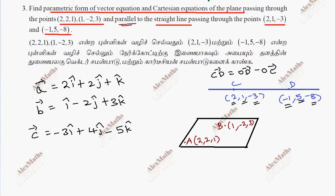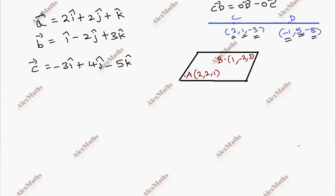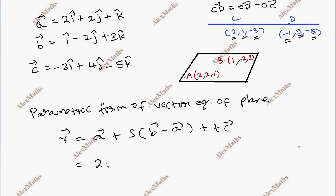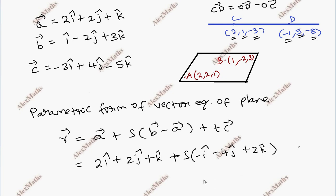So once we have A, B, C, the parametric form of the vector equation of the plane is: R vector equals a vector plus s times (b minus a) plus t times c. Here a vector is 2i plus 2j plus k, plus s times (b minus a), which is minus i minus 4j plus 2k, plus t times c vector.